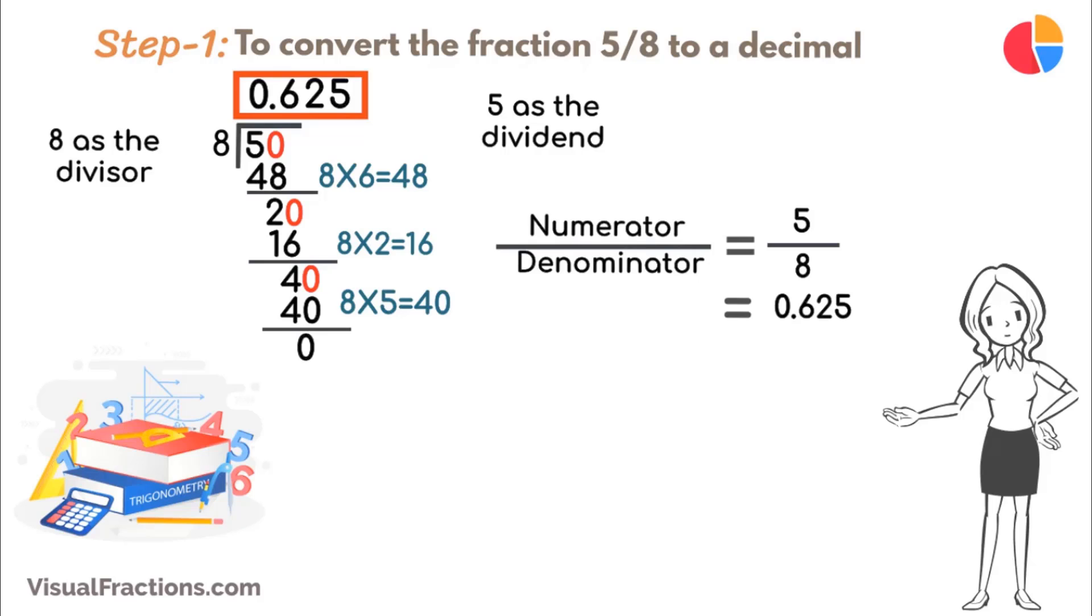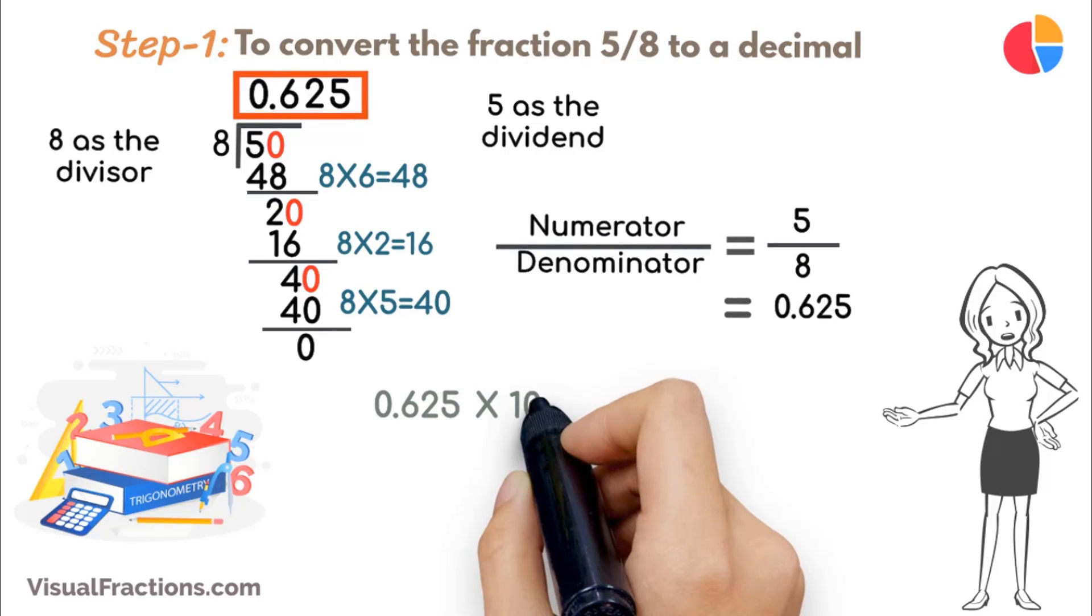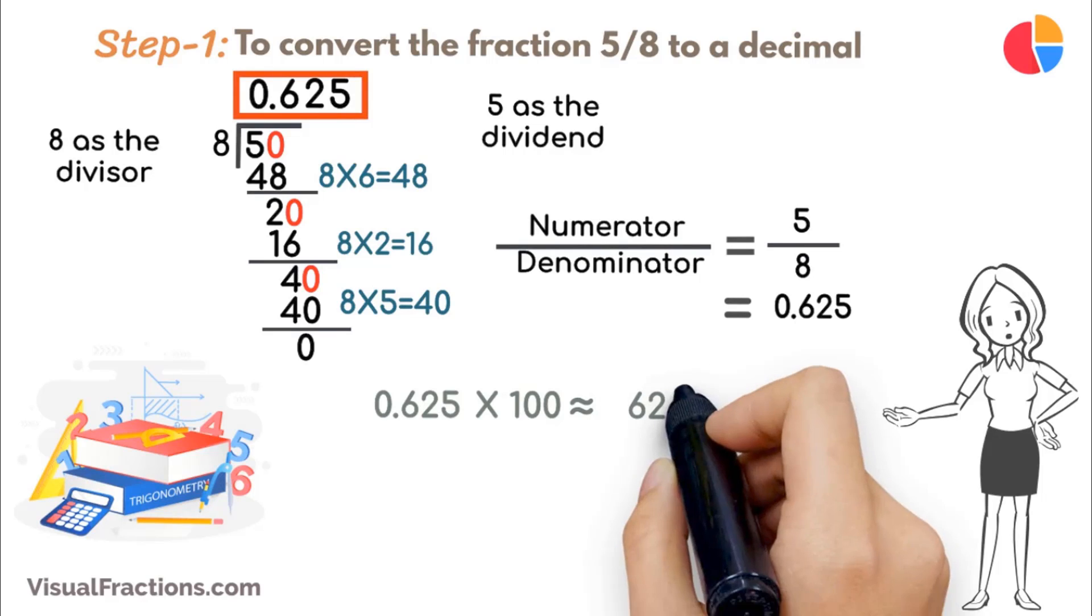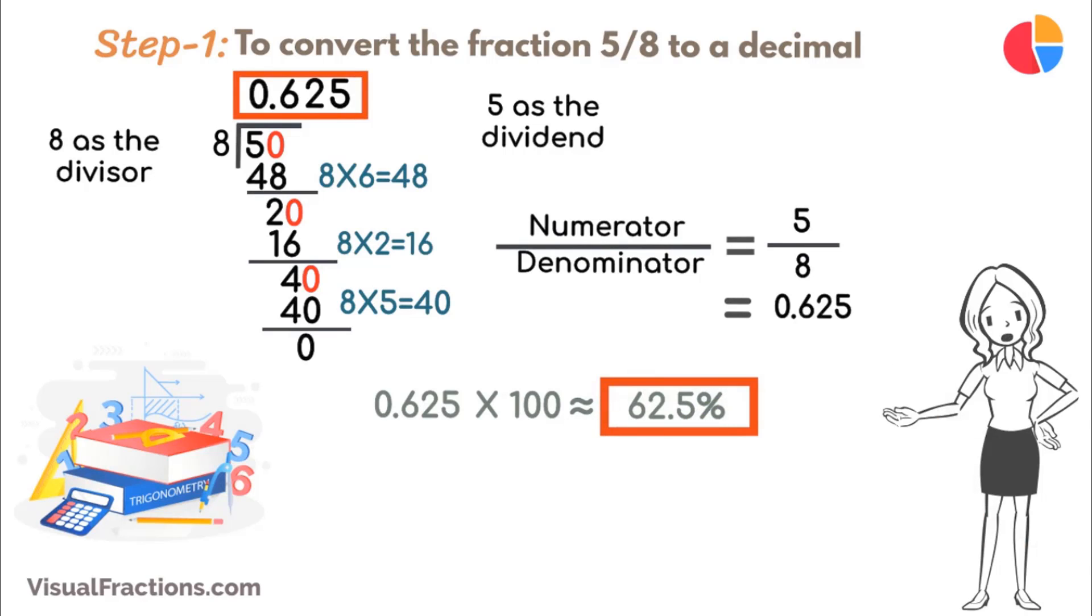Now, to convert 0.625 to a percent, we simply multiply it by 100, resulting in 62.5%. So, there we have it. The fraction 5 eighths expressed as a percent is exactly 62.5%.